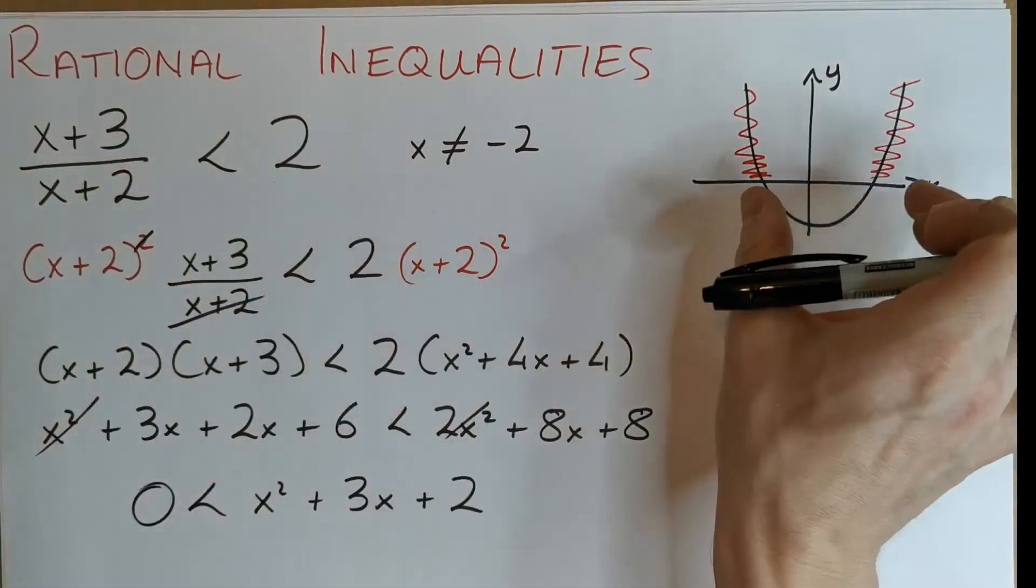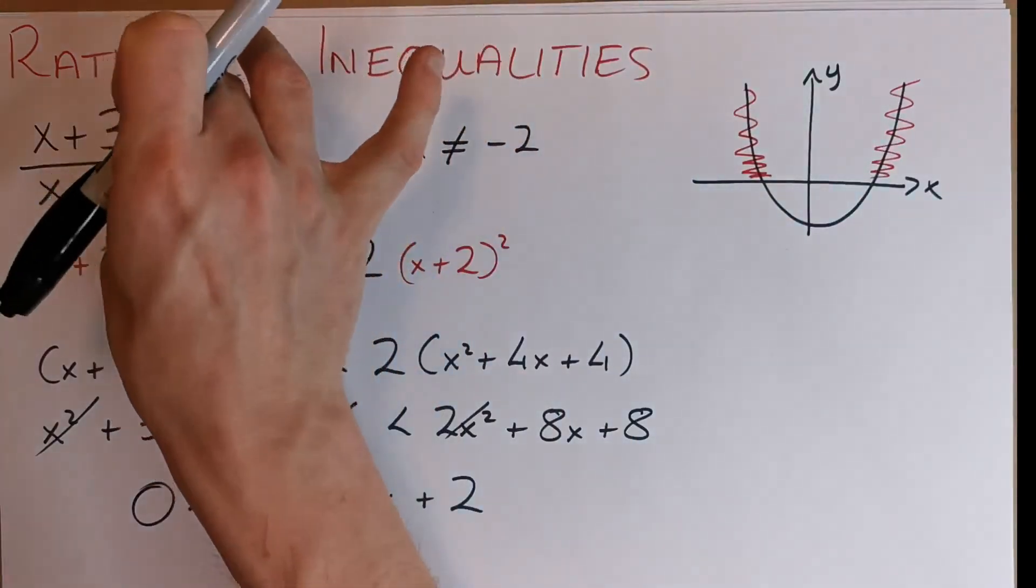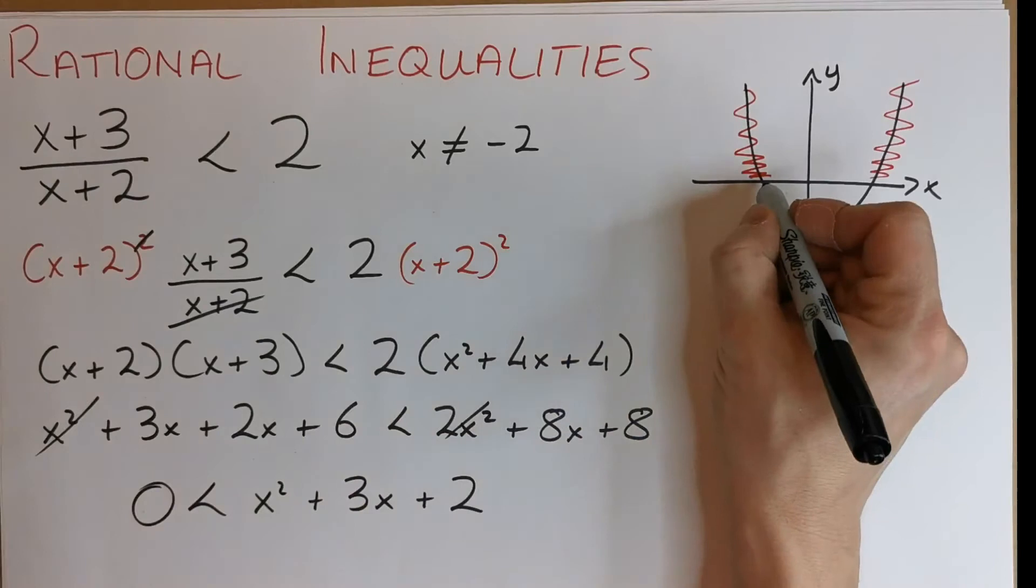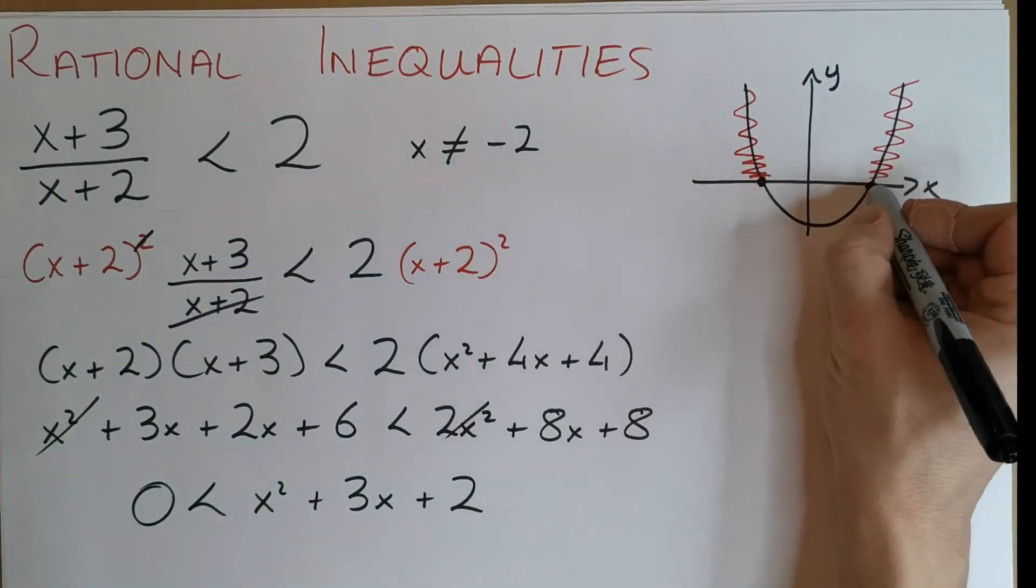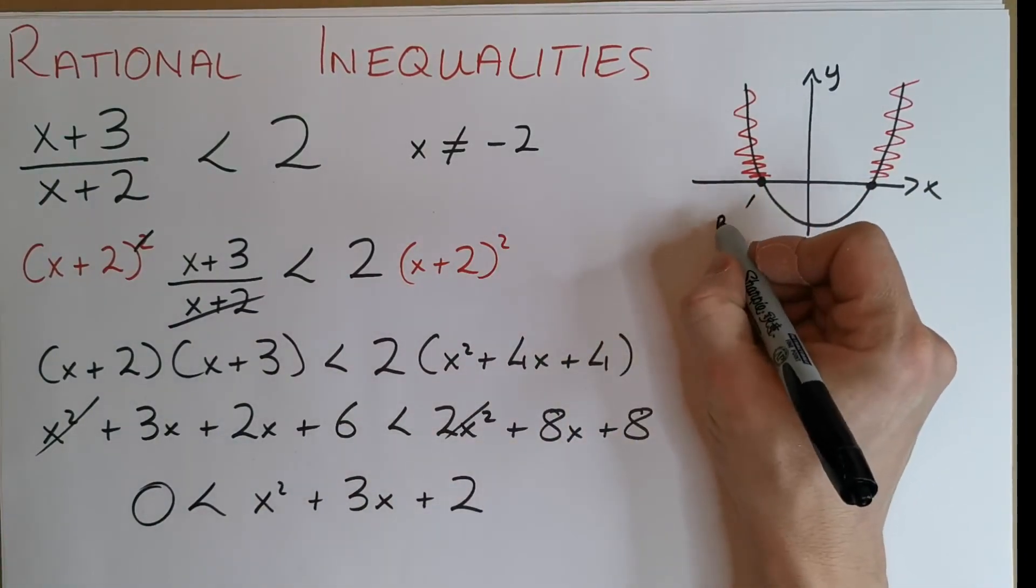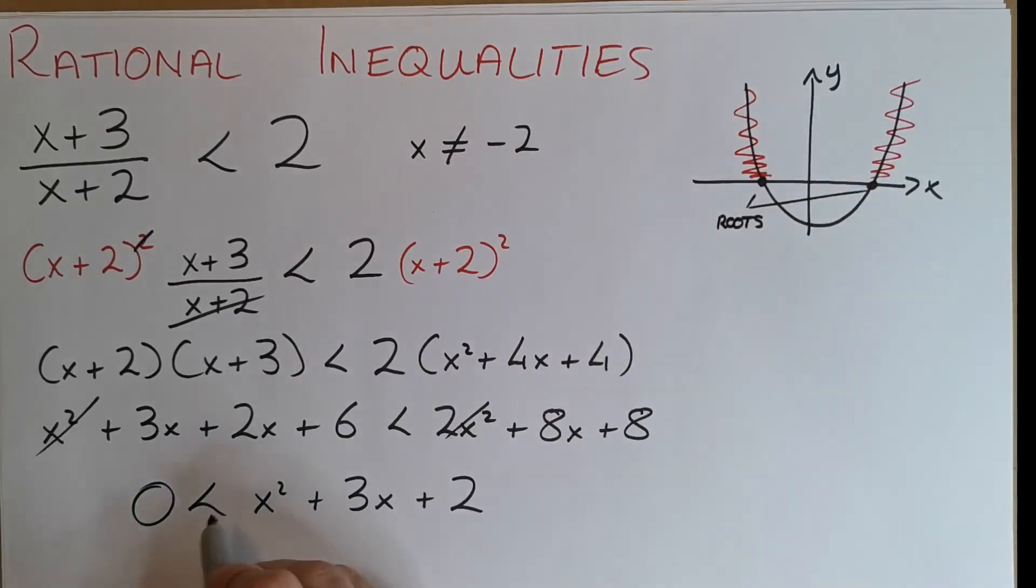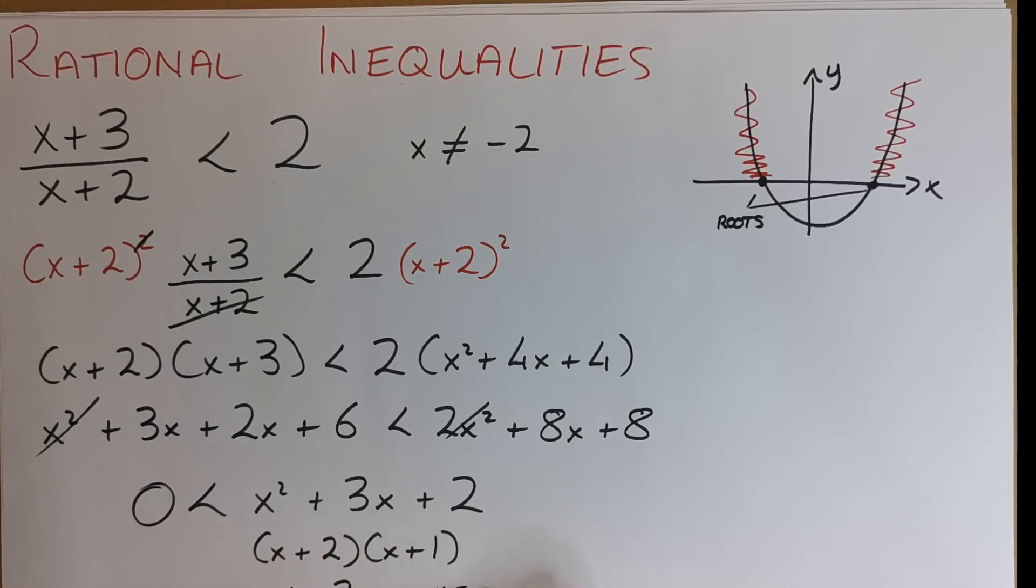And it turns out the solution set for this problem is the same solution set for this problem here. So let's actually figure out these points. What do we know these points to be? Well these are the roots. How do we get these roots? We factorize this. x is a simple one: x plus 2, x plus 1. So x is either equal to minus 2 or x is equal to minus 1.